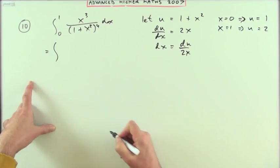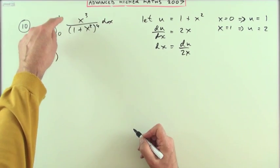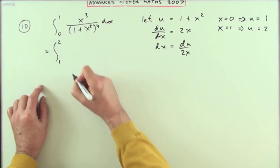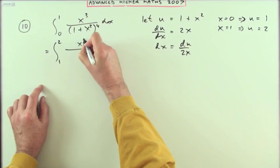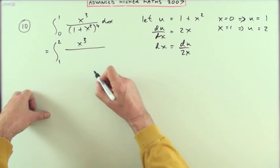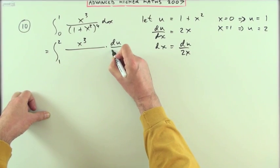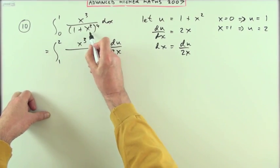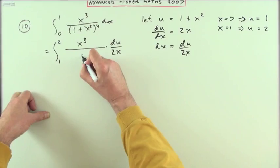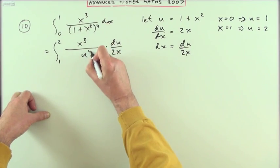So I'll pop back over here and put in what I've got so far. The limits changed from 0 to 1 to 1 to 2. I had x cubed on top, I've got a dx which has been replaced by du by 2x, I've got 1 plus x squared which has been replaced by u, and that's all to the power 4.